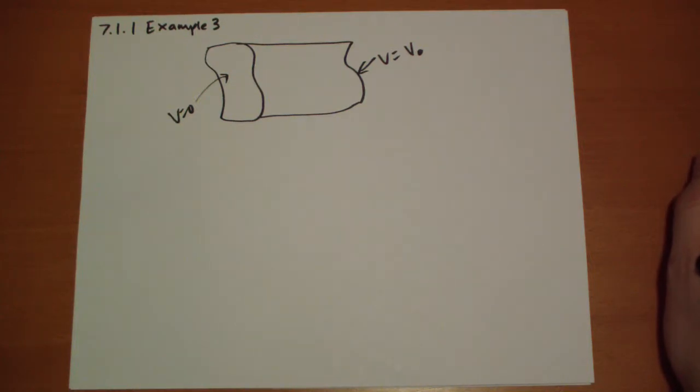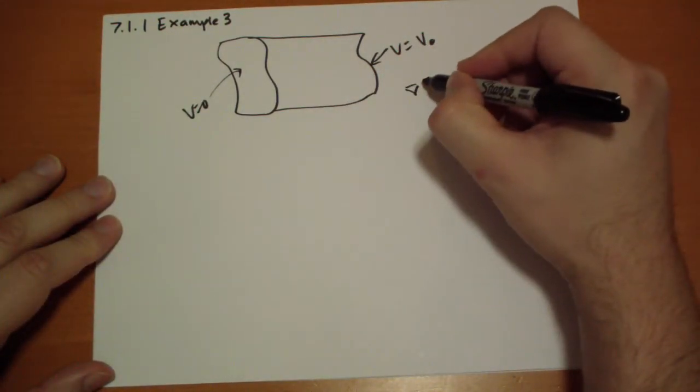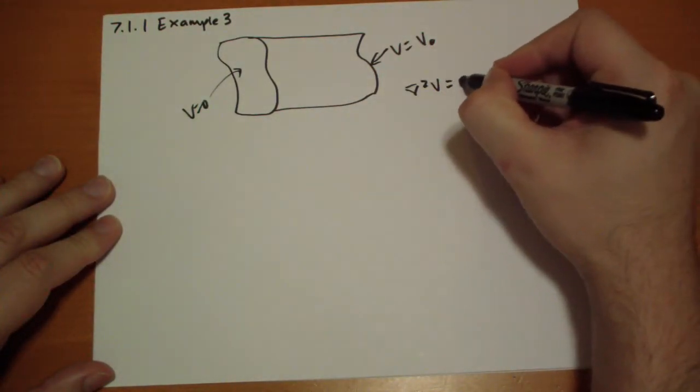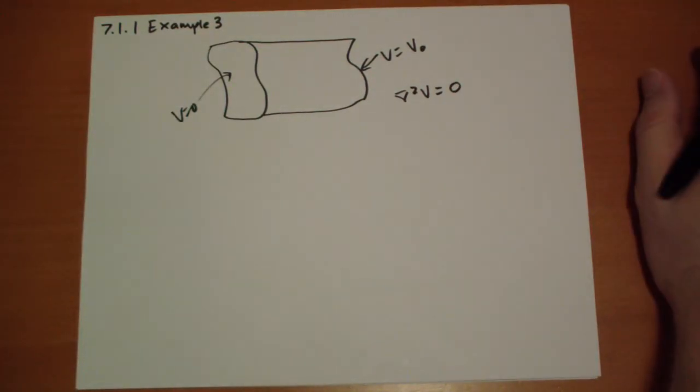So we have a solution for Laplace's equation, which was the Laplacian of V has to equal zero. There's no charge inside here. If there was, it would move right along and create a constant current.